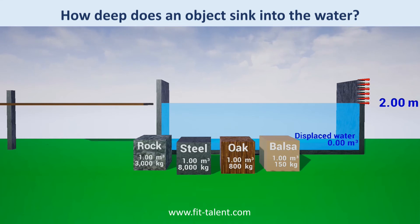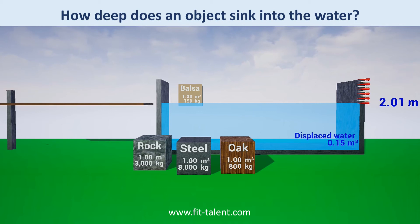Balsa wood has 15% of the density of water. 15% of its volume sinks in and displaces 15% of a cubic meter, or 0.15 cubic meters of water.